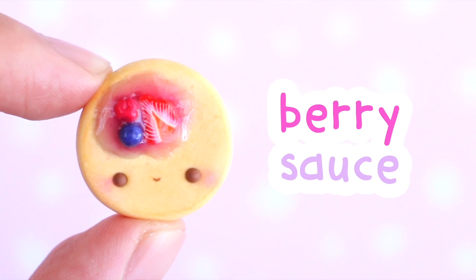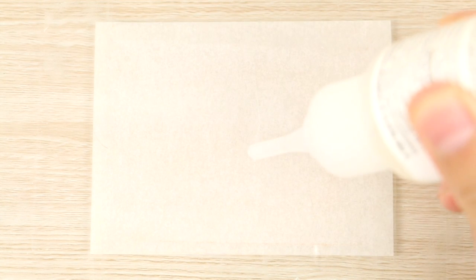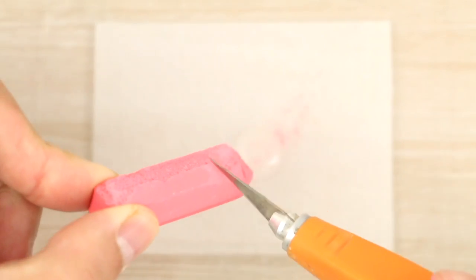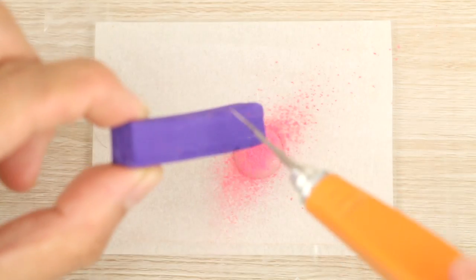So next I'm making some berry sauce. And to start I'm squeezing out some Fimo deco gel. And then mixing in a tiny amount of chalk pastel powder. I like to start with light pink, then dark pink, and finally purple.